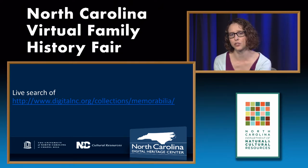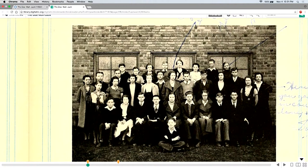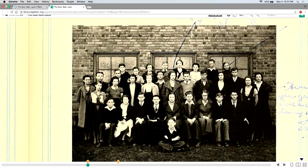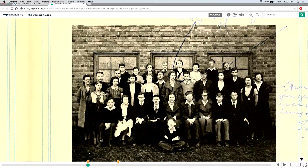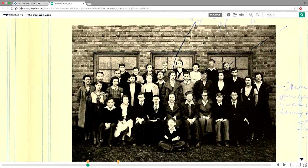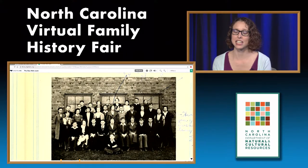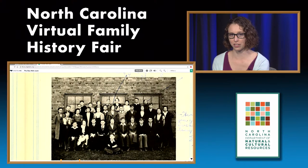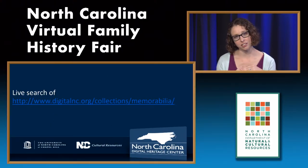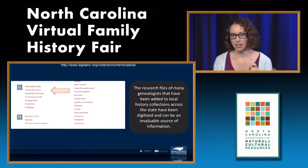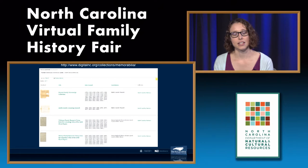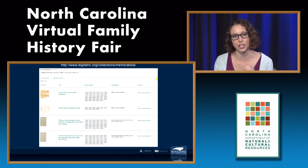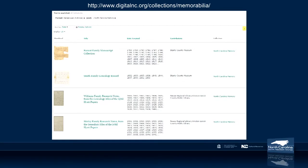To get to those genealogy materials, go to our memorabilia collection and find the genealogies section. Once you click on the genealogy link within the browse view, you can search across them. Once you find one you're interested in, you would search it just like the city directories — full text search through it or just page through the papers.